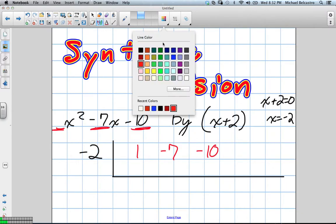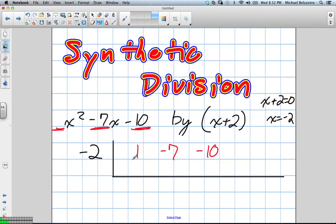The very first step to synthetic division is we actually take down the first coefficient and just bring it directly below. So, the first coefficient is 1, that's going to be our answer for the first one. Now, the only difference between synthetic division and long division is that when we put our terms underneath, which we're about to find.